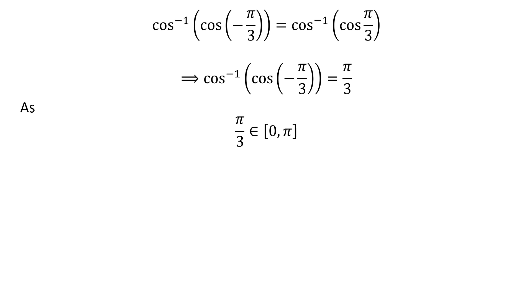So, application of properties of inverse function gives us cos⁻¹(cos(-π/3)) = π/3, as π/3 belongs to the closed interval [0, π].